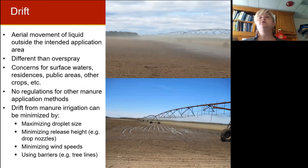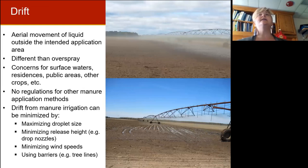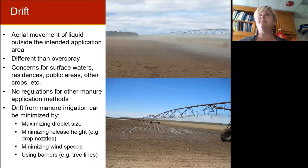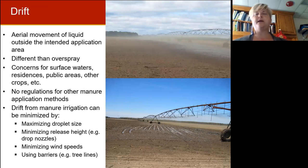In the drift area, we heard a lot of people talking about drift — some talking about manure spraying onto their house or sidewalk. Drift to us means the aerial movement of liquid outside the intended application area. That's different from overspray — we defined overspray as when you hit a house or a sidewalk, and we always agreed that was not a practice we would ever support and should always be avoided. You should be able to control that using knowledge of your irrigation system and wind information. Application location becomes really important.